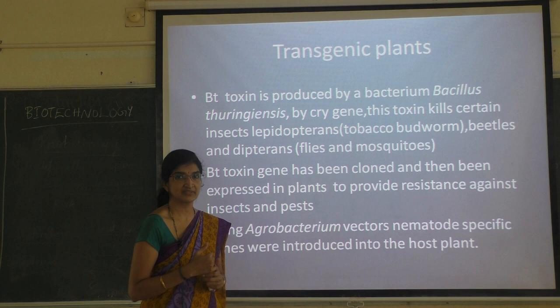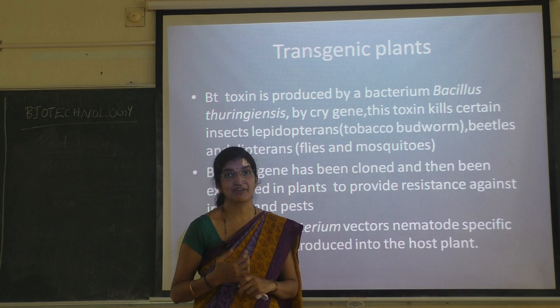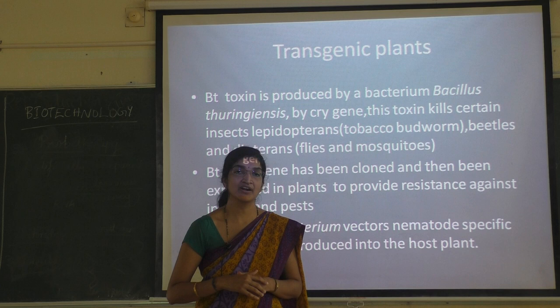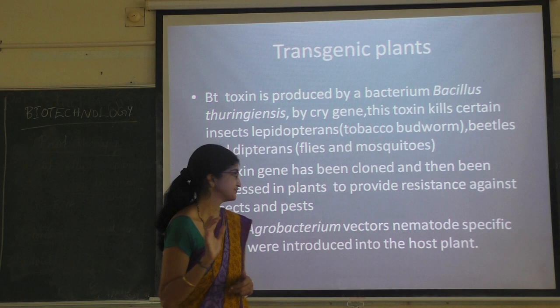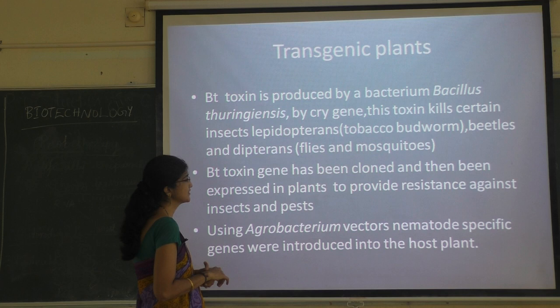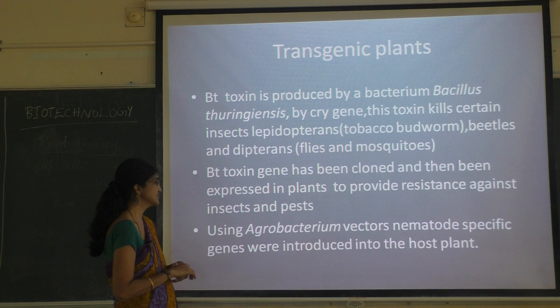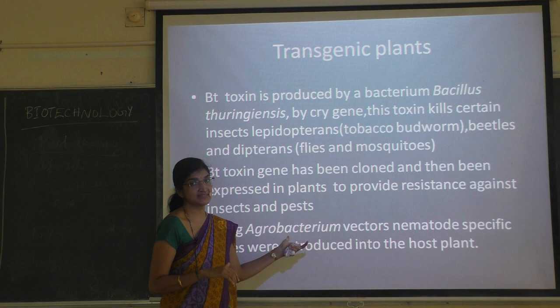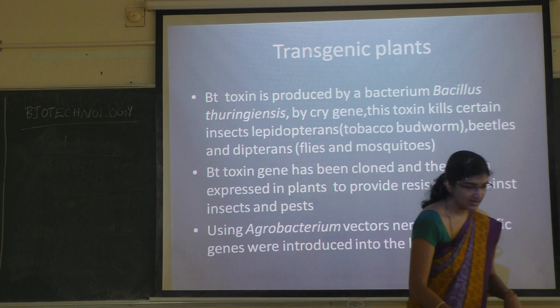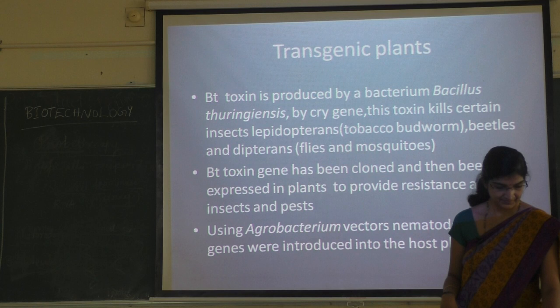The cry gene is specific to specific groups of insects; different types of proteins are produced. Cry genes are of different types — cry 2AB, cry 1AC, and others — and they are specific to specific types of insects. The Bt toxin gene has been cloned and expressed in plants to provide resistance against insects and pests. Similarly, pest-resistant plants can be obtained where nematode-specific genes are incorporated into Agrobacterium.